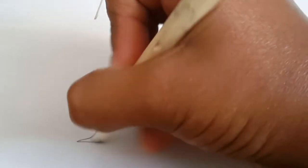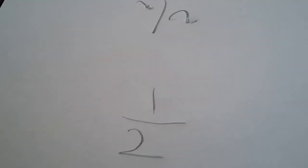You can also write it like one over two, like this. It doesn't matter how you write them, but this is called a half.